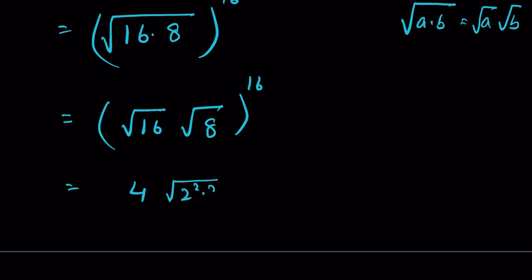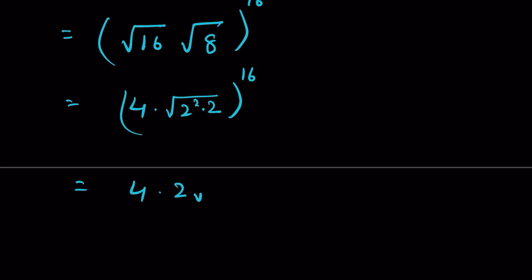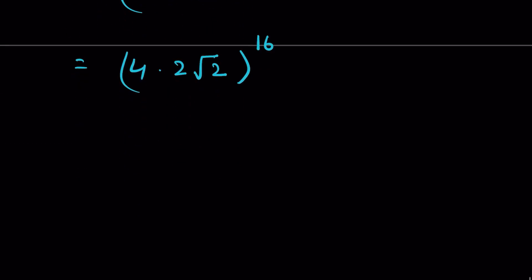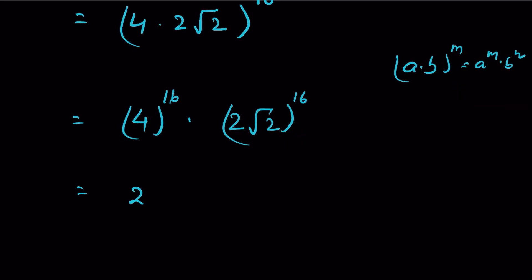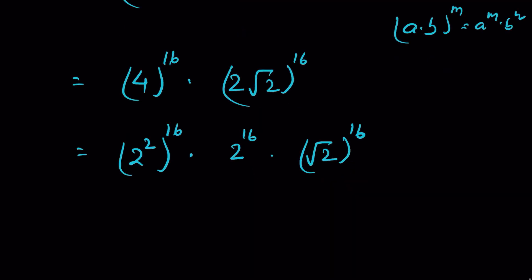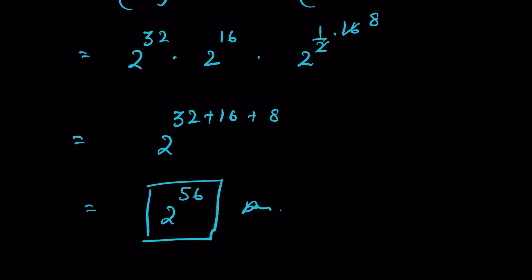√16 = 4 and √8 = 2√2, so this is (4 times 2√2)^16. Using the identity (a×b)^m = a^m × b^m, this gives 4^16 times (2√2)^16, which equals 2^(2×16) times 2^16 times (√2)^16 = 2^32 times 2^16 times 2^(1/2 × 16) = 2^32 times 2^16 times 2^8. Adding exponents: 2^(32+16+8) = 2^56.